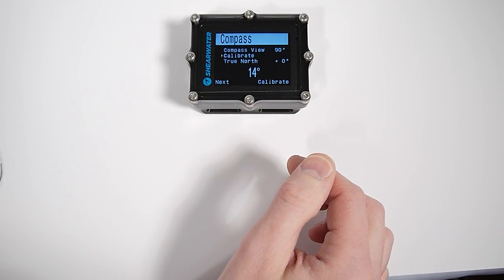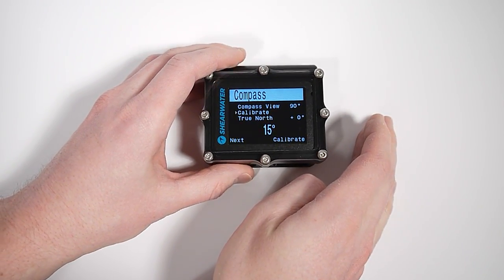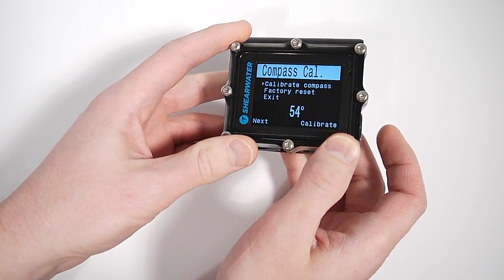So I'm going to move the compass out of the way because it's got a magnet in it and that could interfere with our calibration. You want to do this calibration away from any large metal objects.